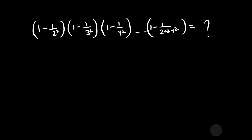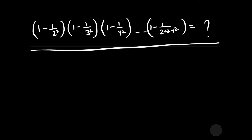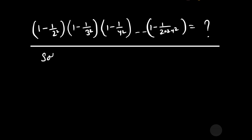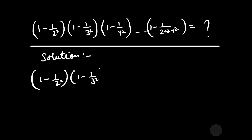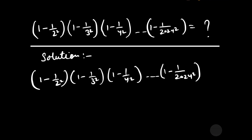Now let us start to solve this question. Our question is 1 minus 1 by 2 squared, multiplied by 1 minus 1 by 3 squared, multiplied by 1 minus 1 by 4 squared, and so on till 1 minus 1 by 2024 squared. We have to calculate the value of this multiplication series.